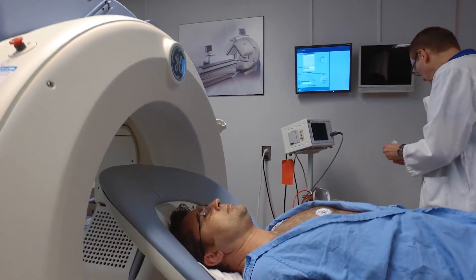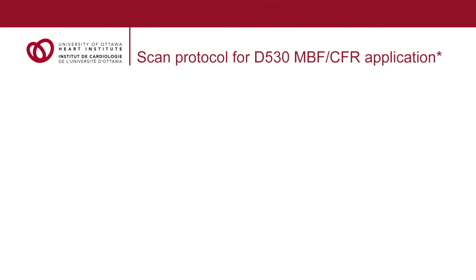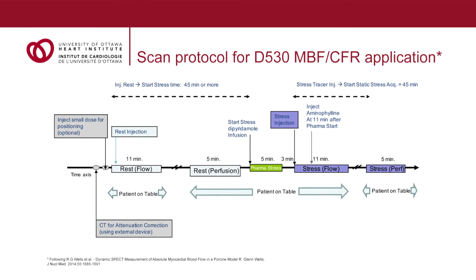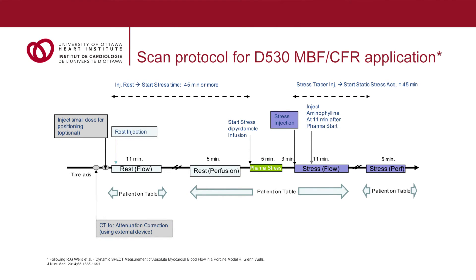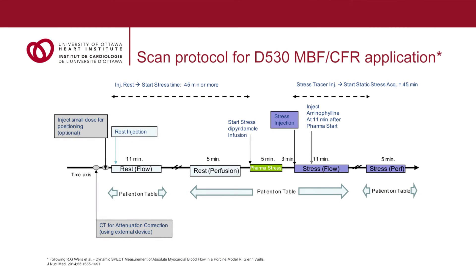Here at the University of Ottawa Heart Institute, the protocol we're currently using to measure myocardial flow and flow reserve involves three acquisitions. The patient is first positioned on the table, an injection is made at rest, and images are acquired immediately following that injection. The patient is then free to get up and returns approximately 30 to 40 minutes later for images acquired in a standard relative perfusion imaging series. While still on the table following the resting images, stress is induced via a pharmacological agent, the tracer is injected at peak stress, and images are acquired immediately. The patient then returns 30 to 40 minutes later for a second set of stress images corresponding to a standard clinical relative perfusion protocol.